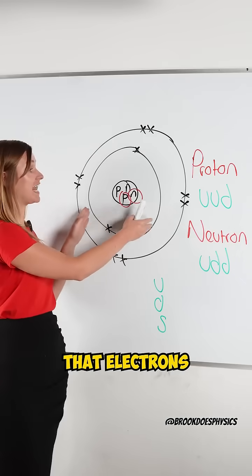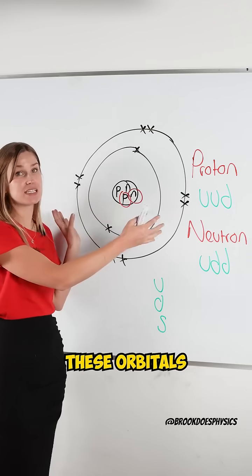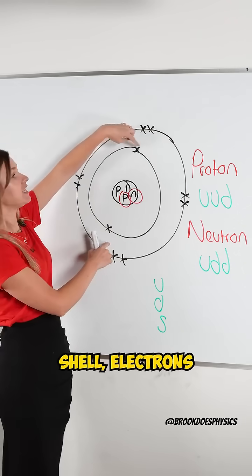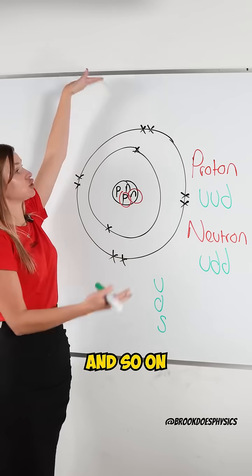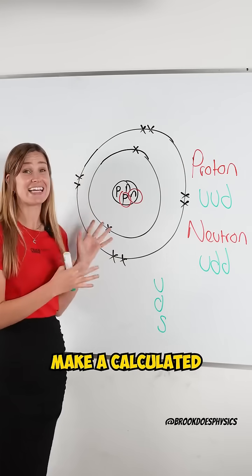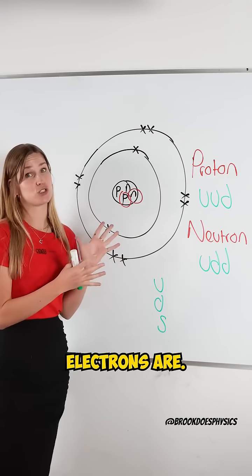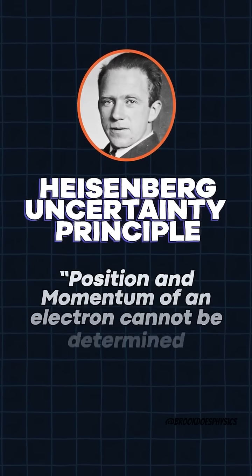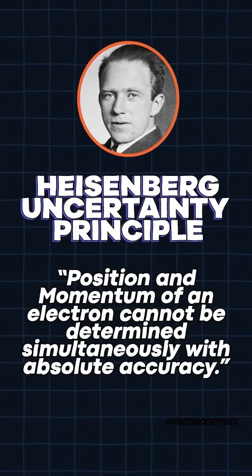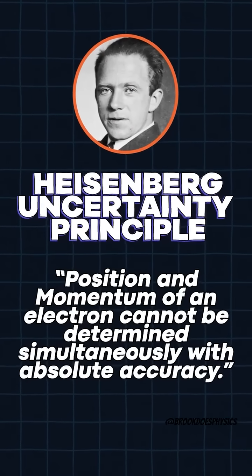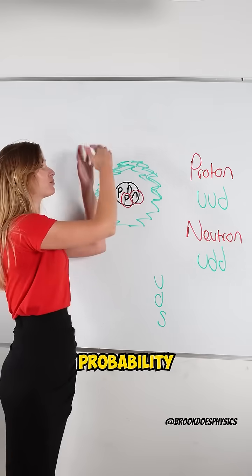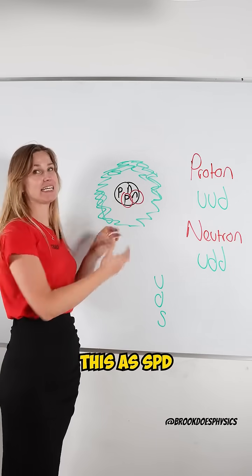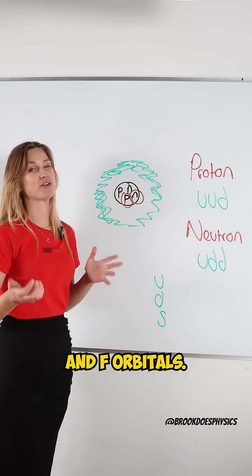In school you're told that electrons are in orbitals due to Bohr — two electrons in the first shell, eight electrons in the next shell, and so on. But we can only make a calculated guess where these electrons are, due to Heisenberg's uncertainty principle, which says we never know exactly where an electron is, just the probability of where it will be. So electrons have a probability of where they're most likely to be around the nucleus, and we model this as S, P, D, and F orbitals.